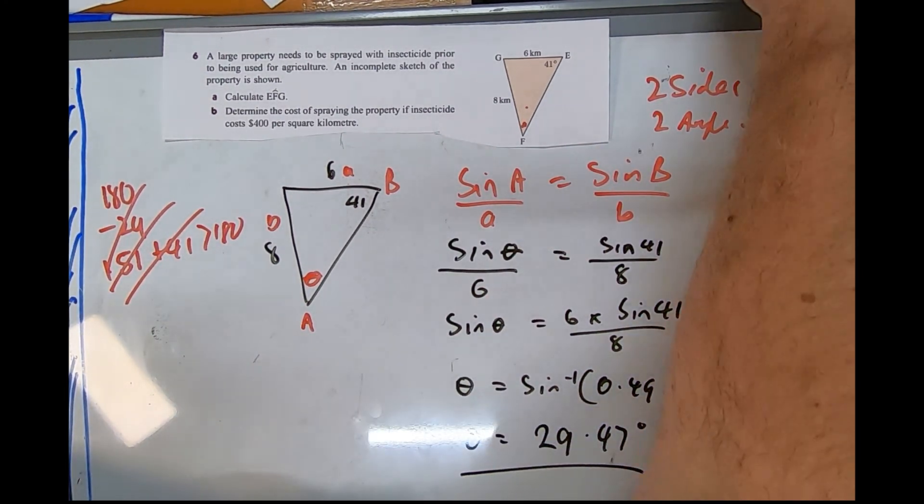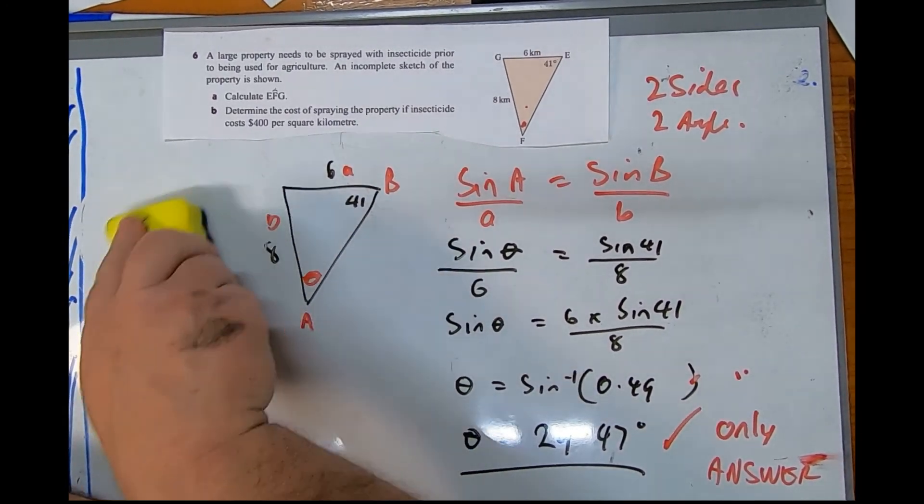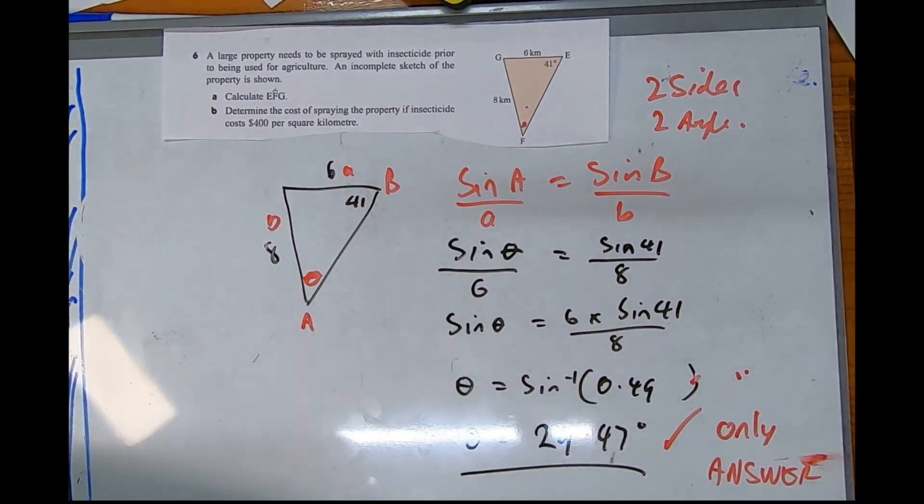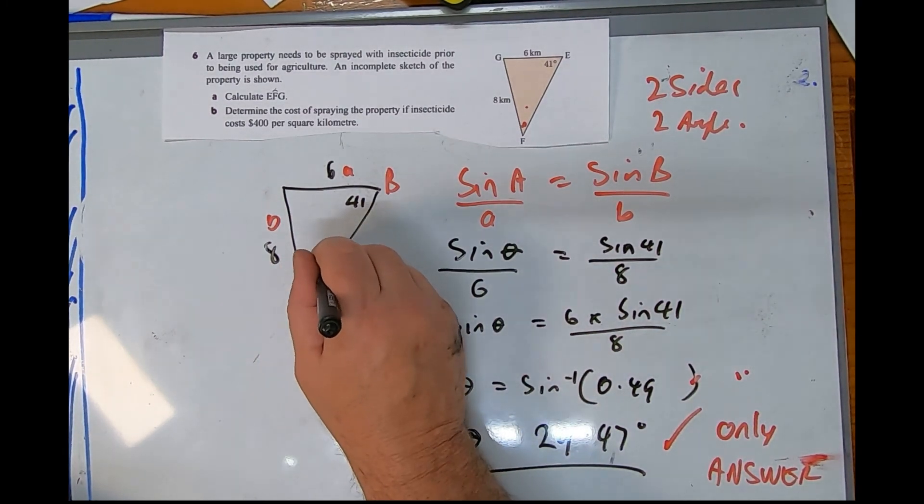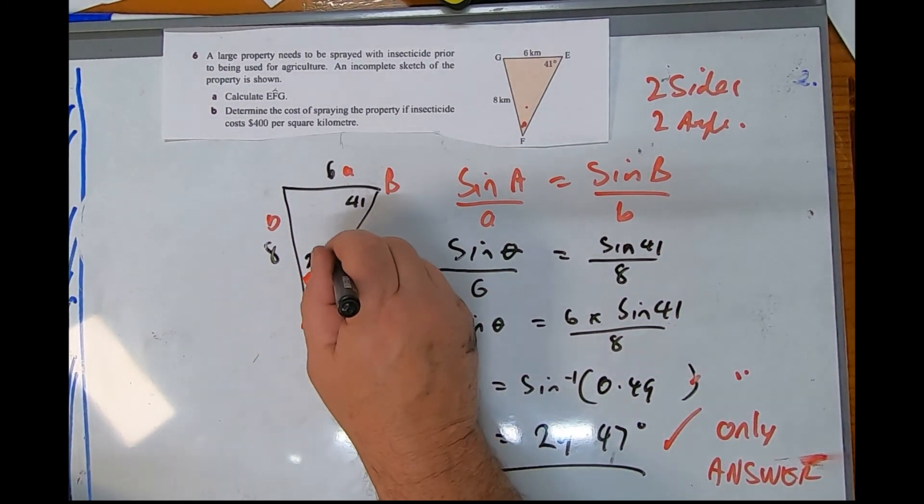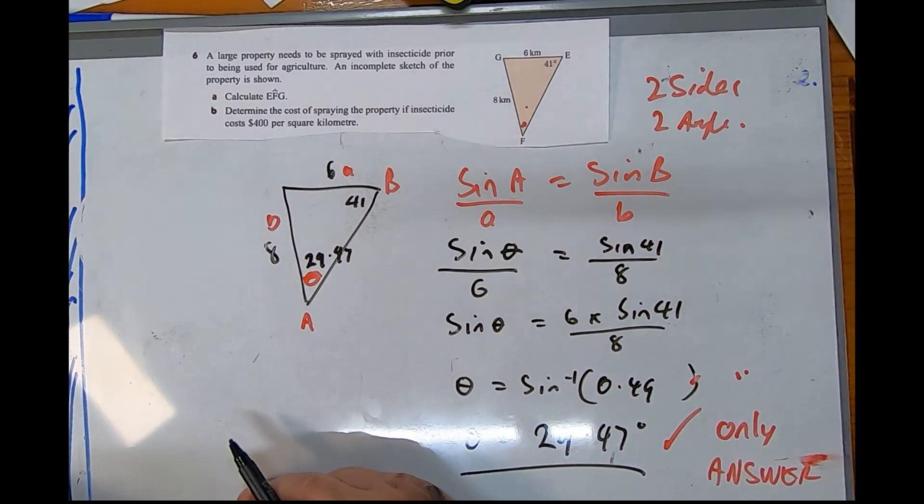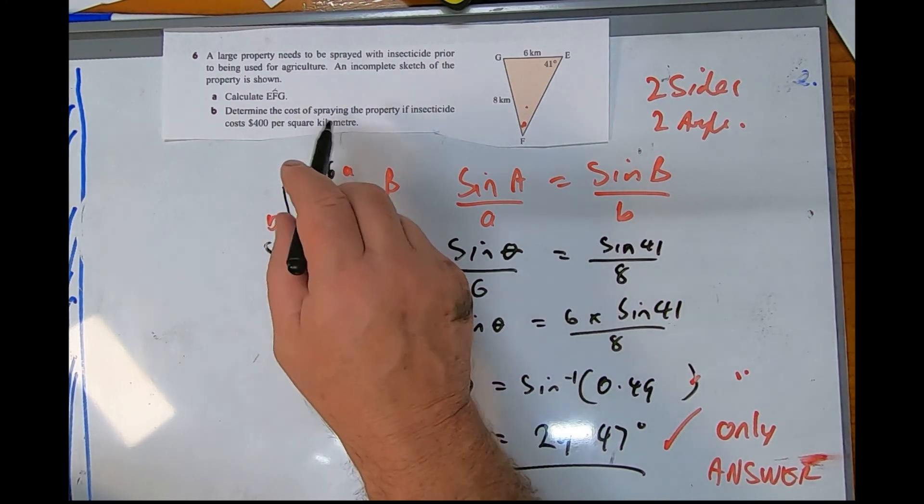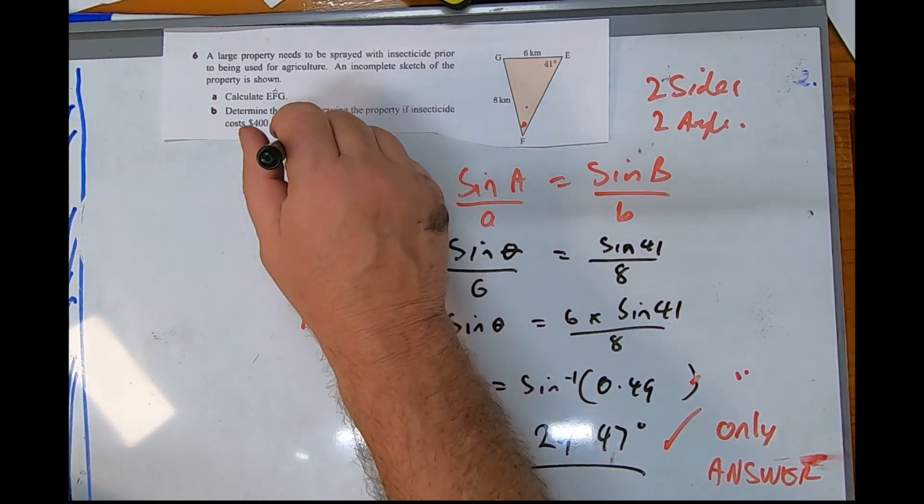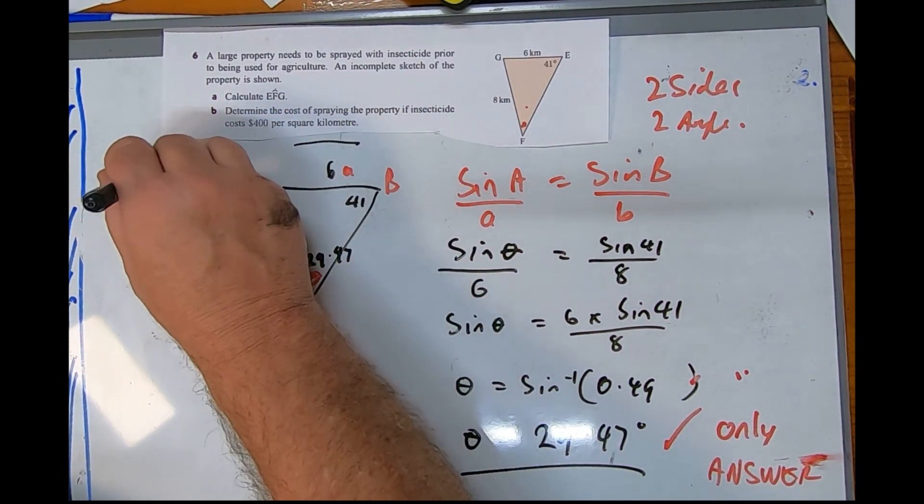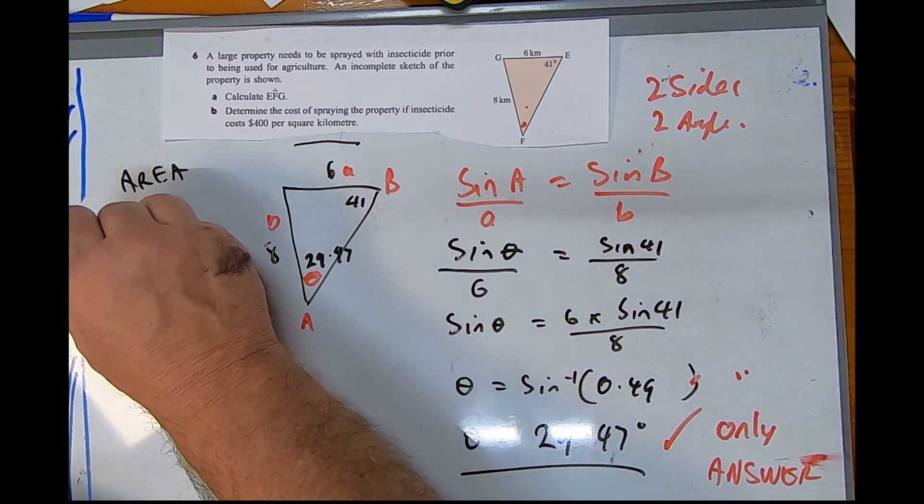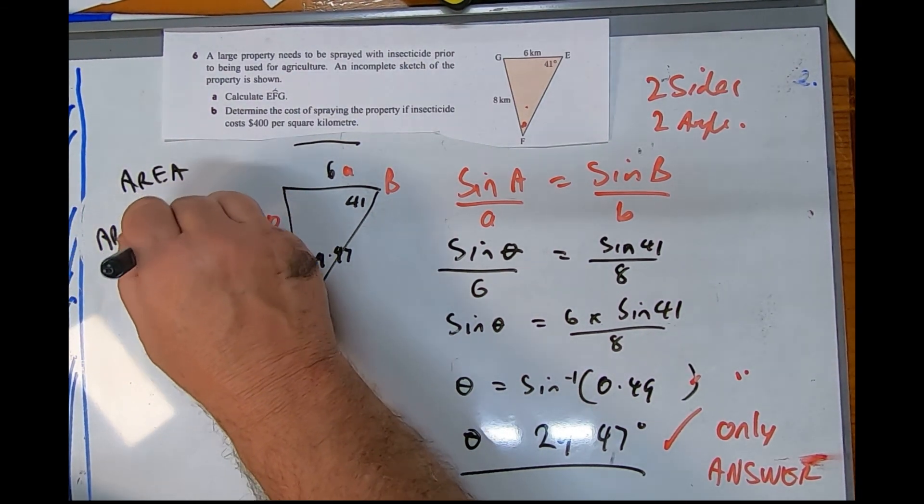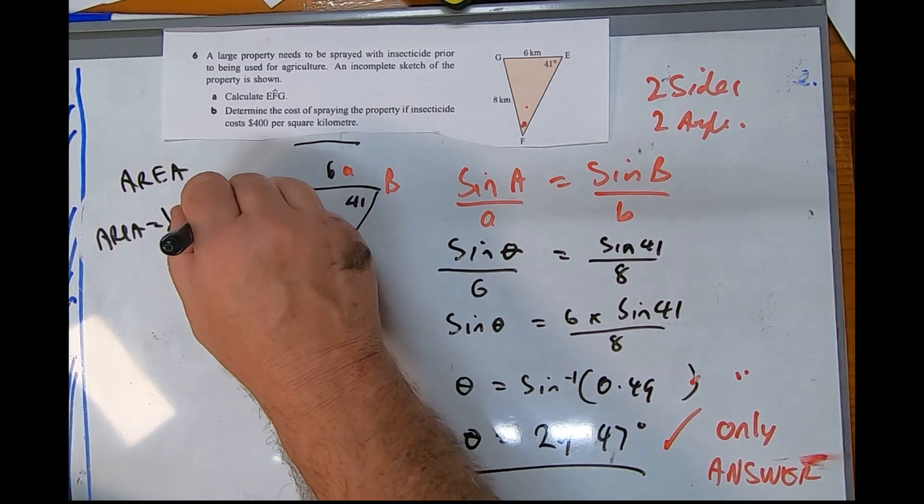So I do just glance up there and see we've got more to go. Let me put 29.47. Determine the cost of spraying the property if insecticide costs $400 per square kilometer. That is word for area.